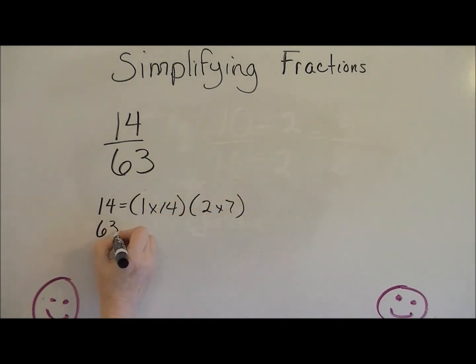What are the factors of 63? 1 times 63 and 9 times 7. It's also divisible by 3. So 3 times 21. And that's it.